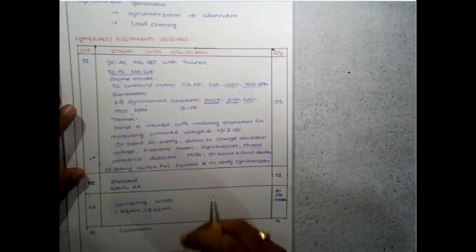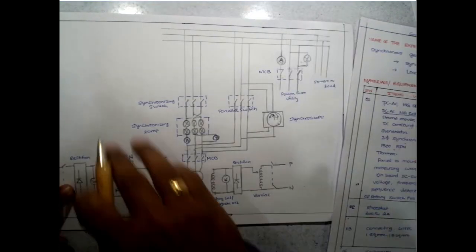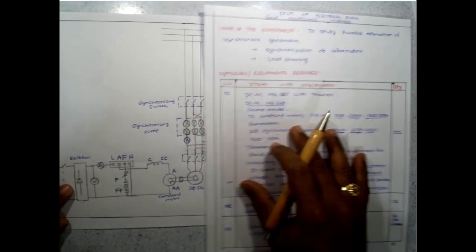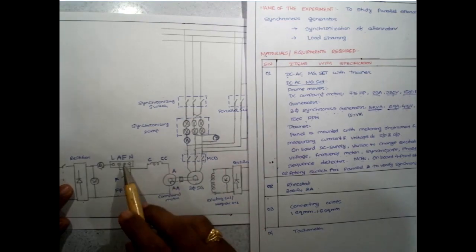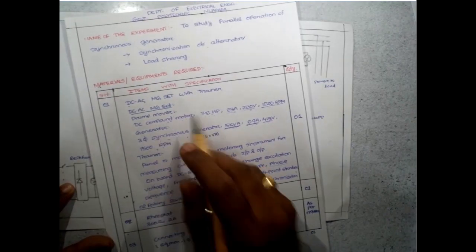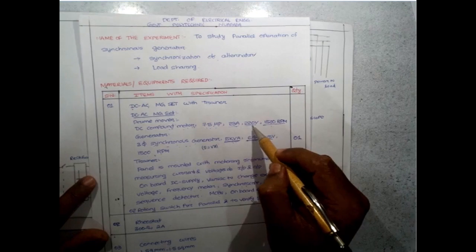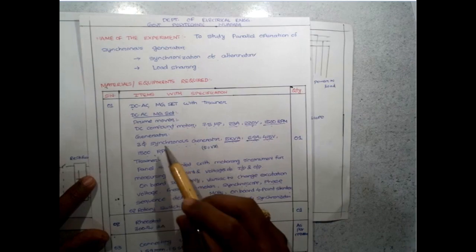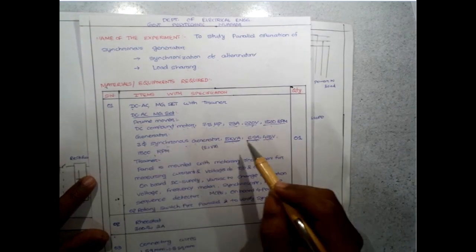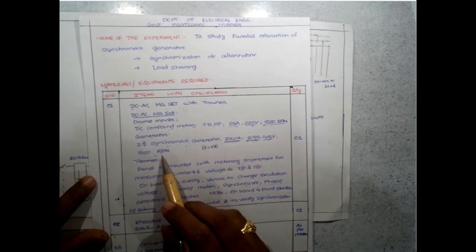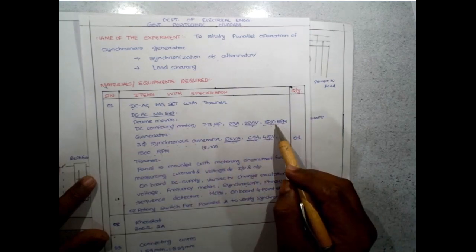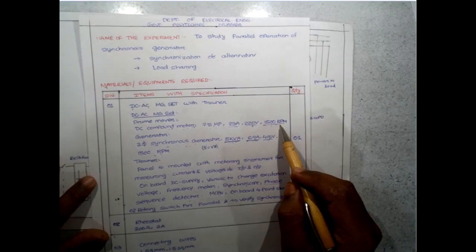This is the complete circuit diagram of this practical. This is the prime mover — the compound motor — used for rotating the synchronous generator. We will rotate the compound motor with the help of a four-point starter. The synchronous generator we are going to connect in parallel is rated 5 KVA, 6.9 Ampere full load current, with a terminal voltage and 1500 RPM — equal to the rotating speed of the motor, as they are mechanically coupled.